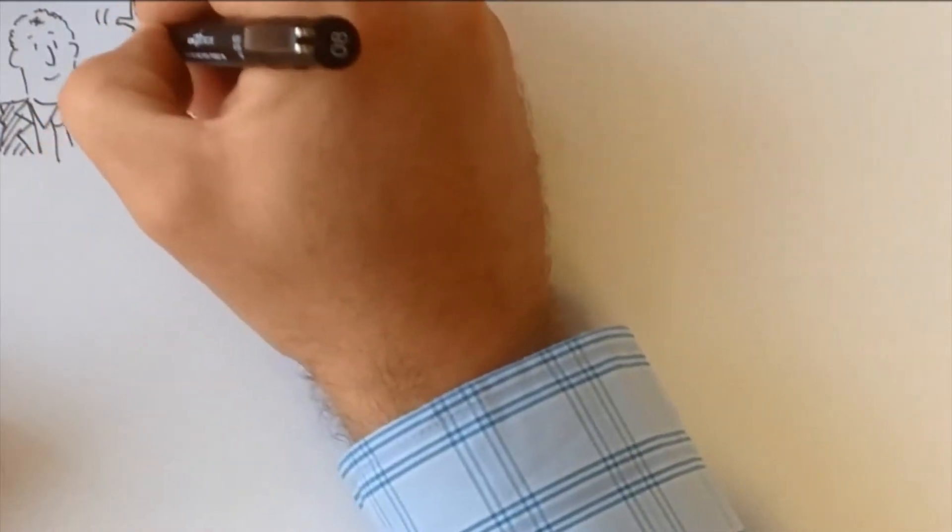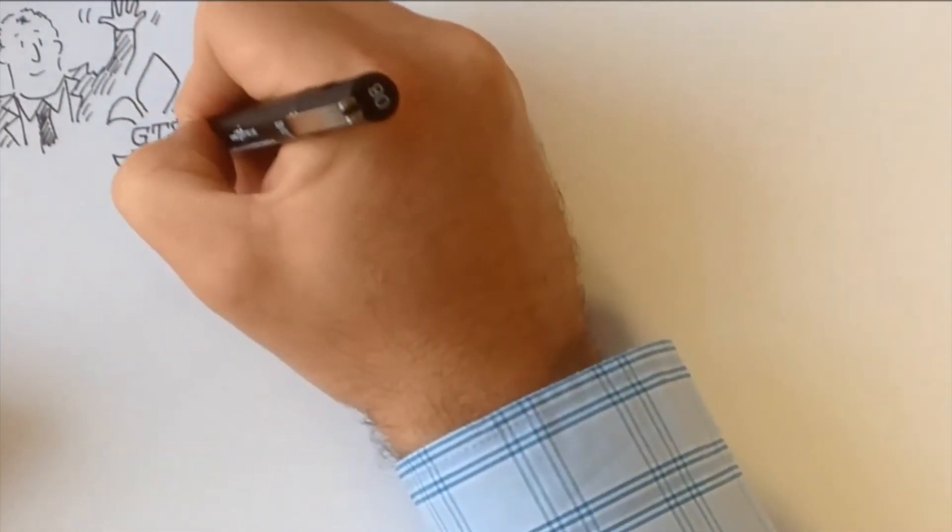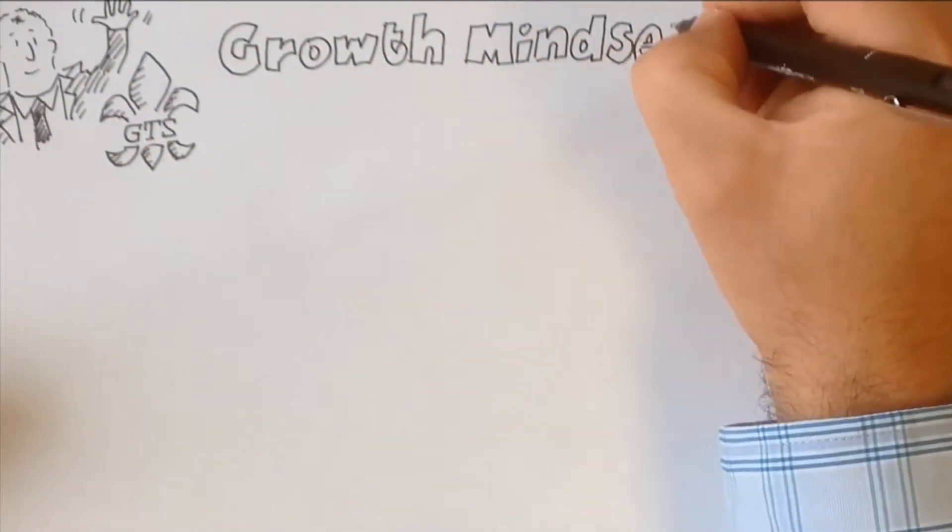Hello, my name is John Stanier and I am assistant headteacher at Great Torrington School and I'd like to share with you the importance of developing a growth mindset.